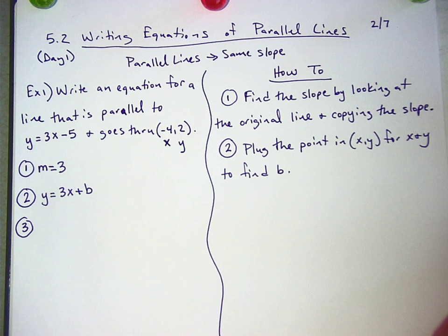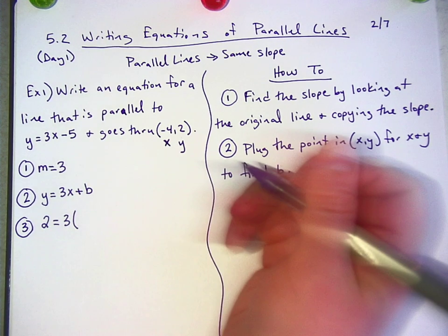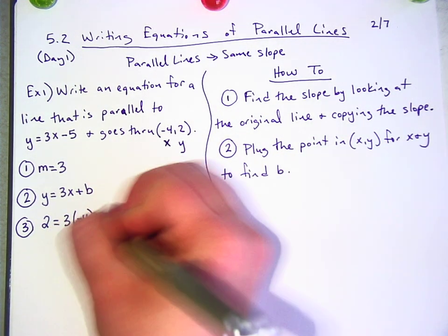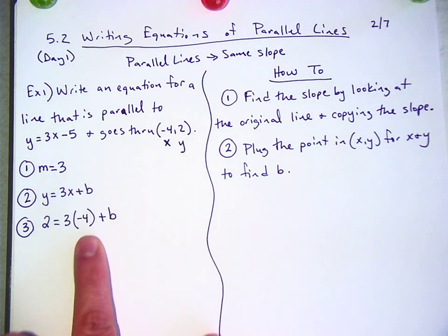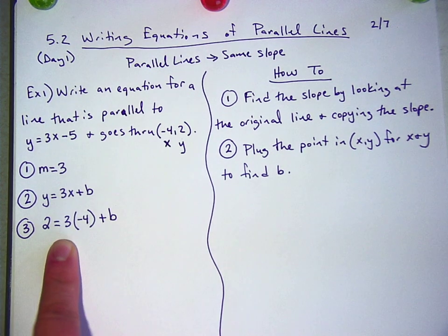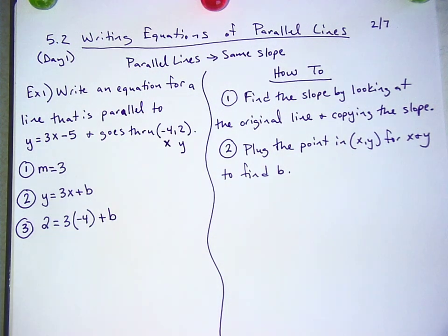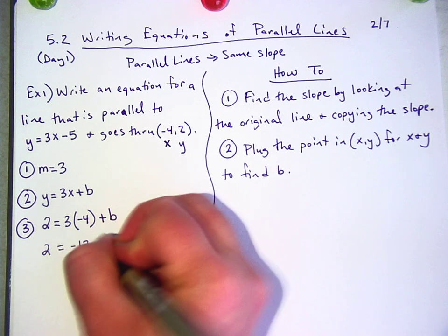So which one's the y, guys? 2, yep. And this would be 3 times negative 4 plus b. I've had people ask me before, how do you know whether to put that negative 4 over 1 or just leave it as negative 4? What do you guys think? Should we leave it as negative 4 right now or put it over 1? Sawyer? Right. If the 3 had been a fraction, then it would have been helpful to have the other one as a fraction, but there's no reason to do it for this one. So this is 2 equals negative 12 plus b.